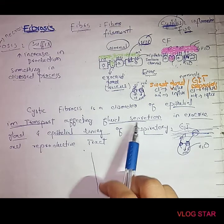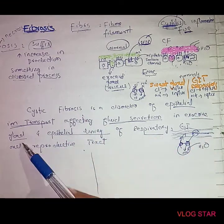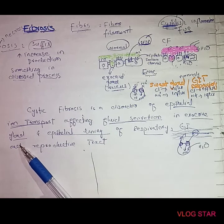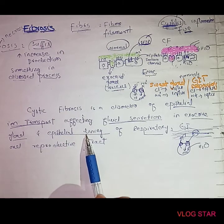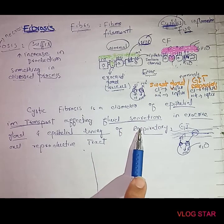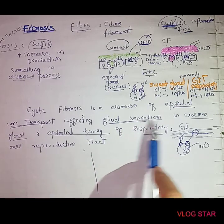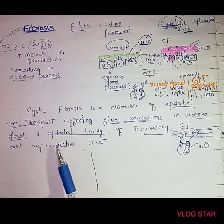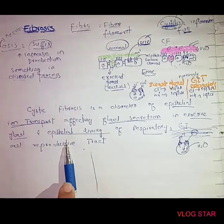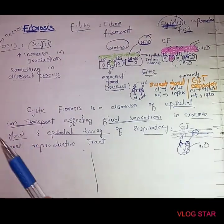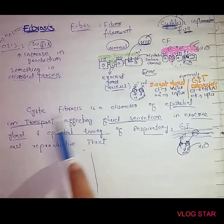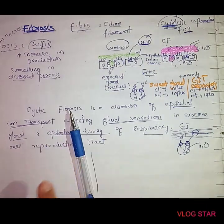In summary, cystic fibrosis is a disorder that affects the epithelial ion channel, which in turn affects fluid secretion from the exocrine glands and epithelial lining of the respiratory system. If you have any questions, you can ask me. Allah Hafiz.